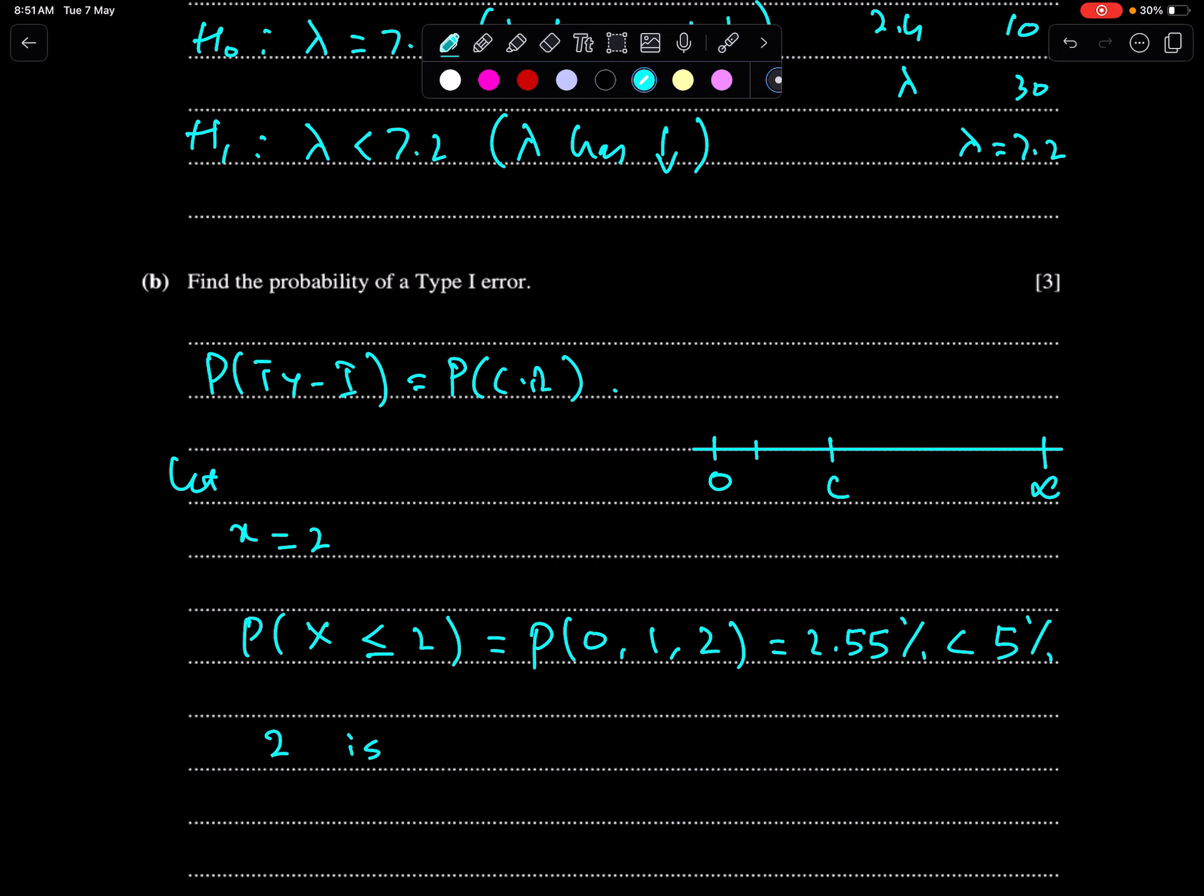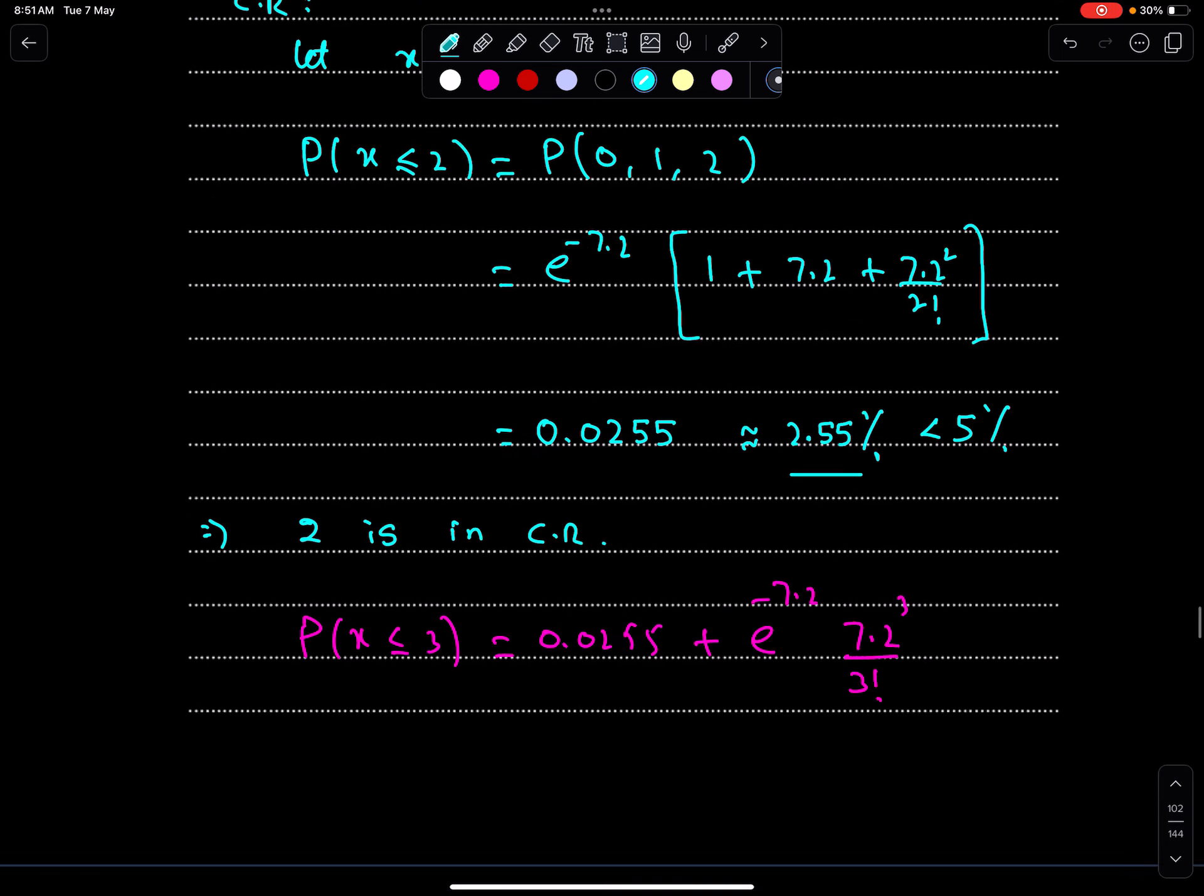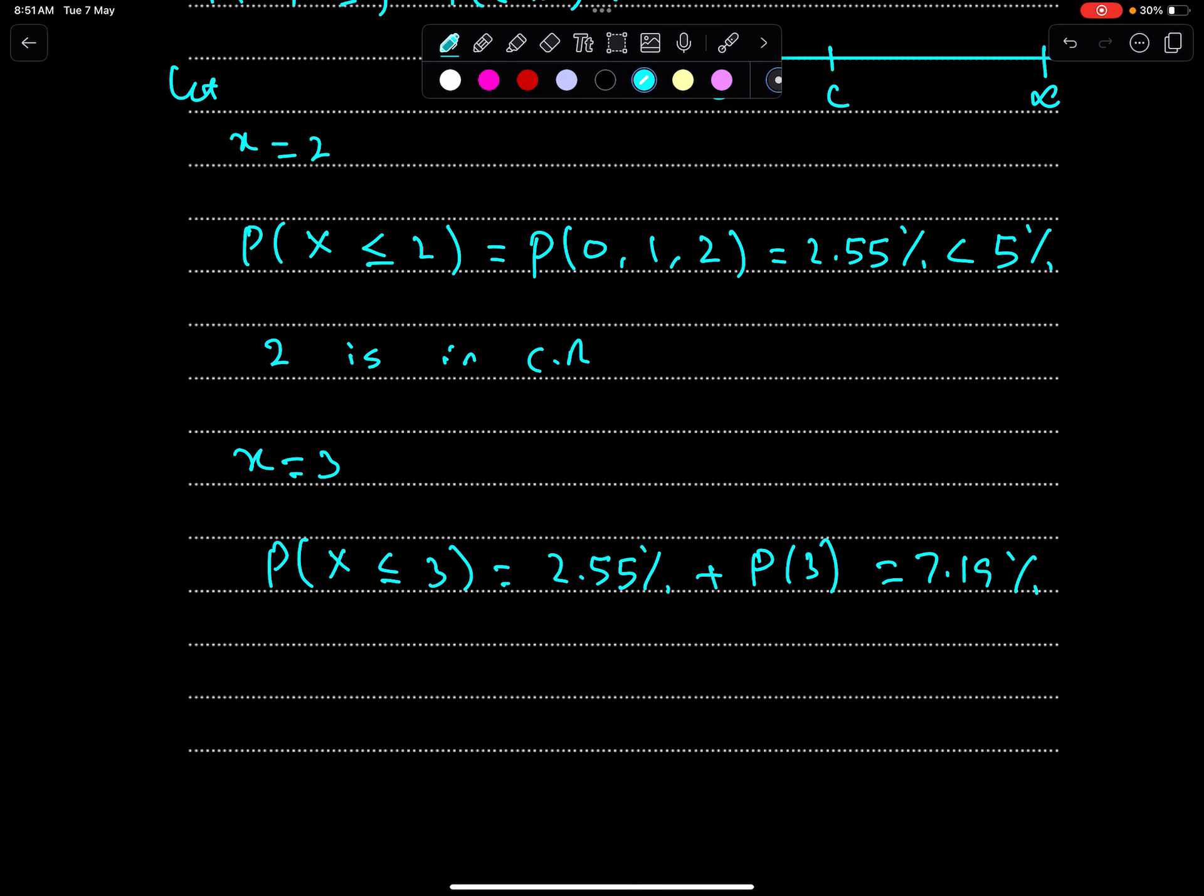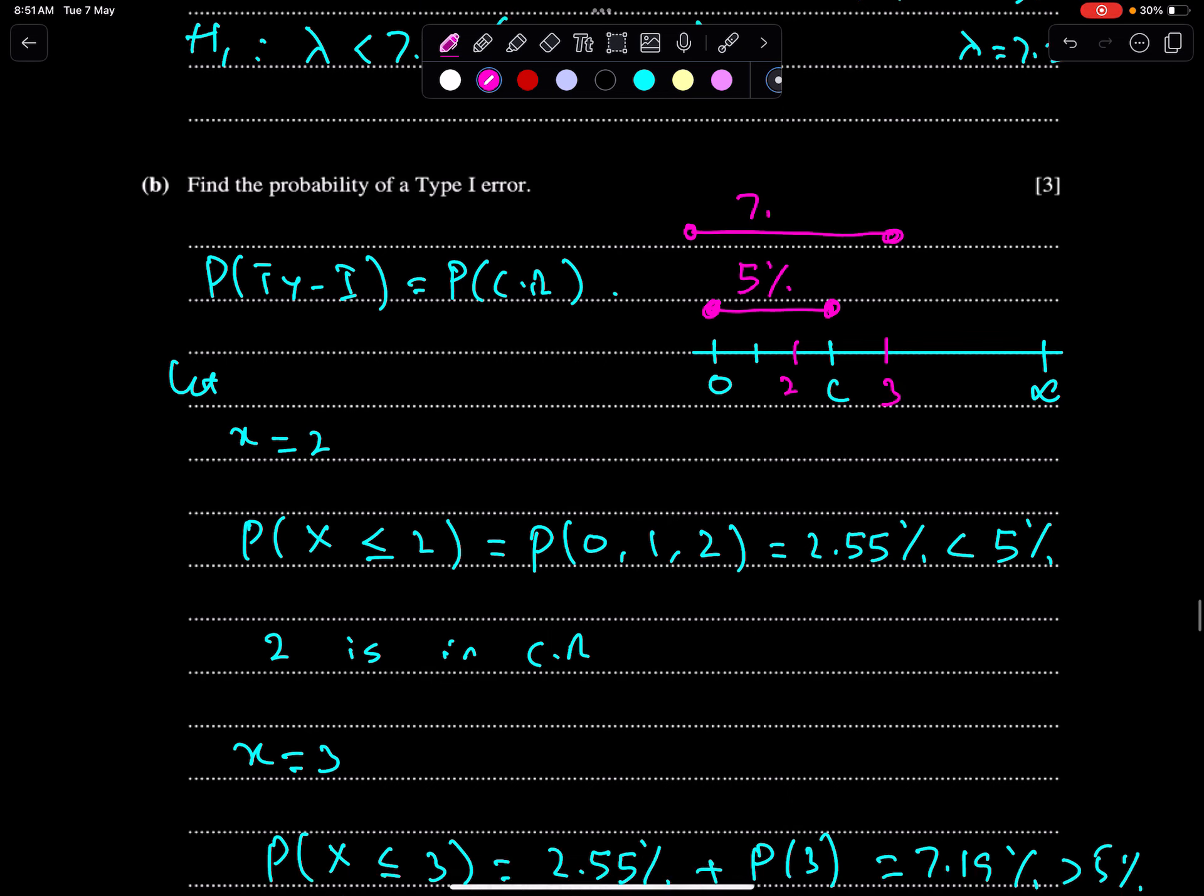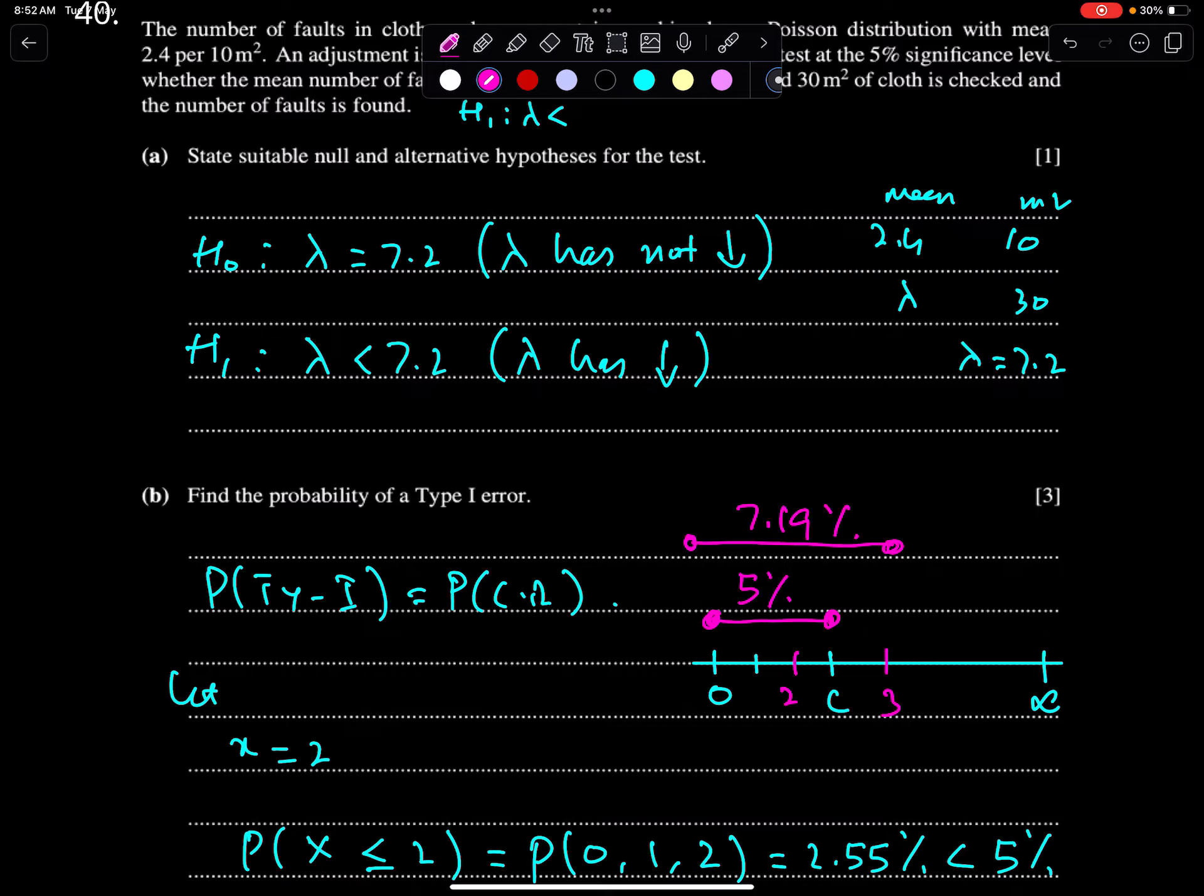So 2 is in critical region. Now try 3. Let X be 3. So X less than equal to 3 is probability 2.55% plus probability of 3, and this answer is 7.19%. This is greater than 5%. The probability of critical region is 5%, and probability of 3 is 7.15%. So 3 is not in critical region.